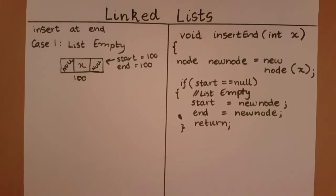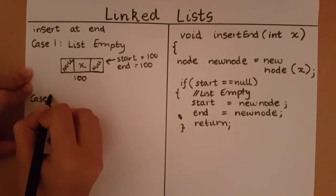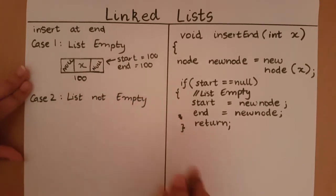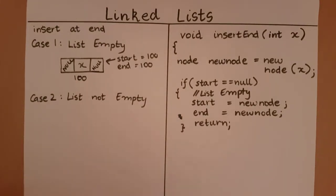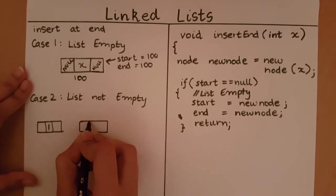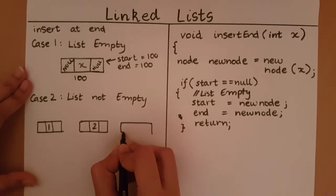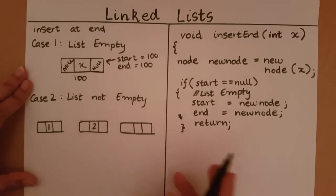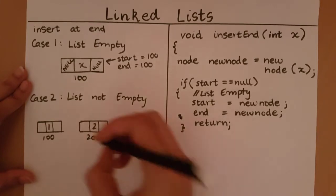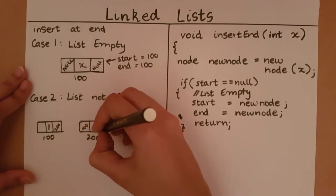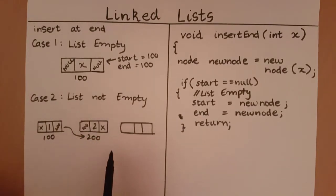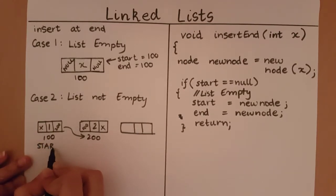Now let's go to the second case when the list is not empty. So let's take an example of any pre-existing list. As of now I have the elements one and two in my list. I am giving arbitrary memory locations. I am going to symbolize null with an x. So as of now this is going to be my list. This will be the start node and this will be the end node.